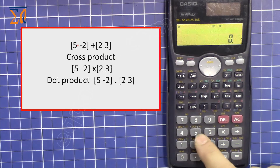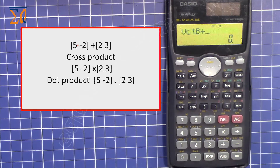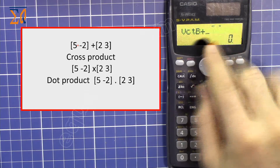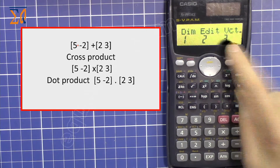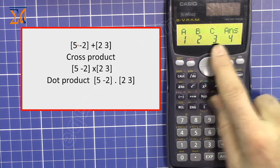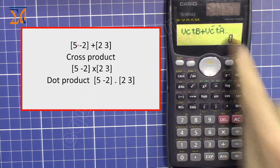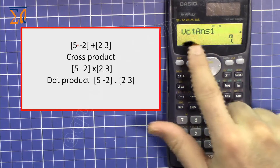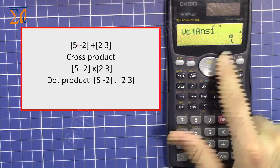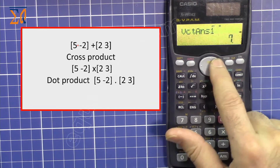Now do the full calculation: press SHIFT 5, then 3 to recall, then 2 for vector B. Press plus, then SHIFT 5, then 3, then 1 for vector A. Press equals. The answer is the first element 7 and the second element 1, so vector B plus vector A equals [7, 1].